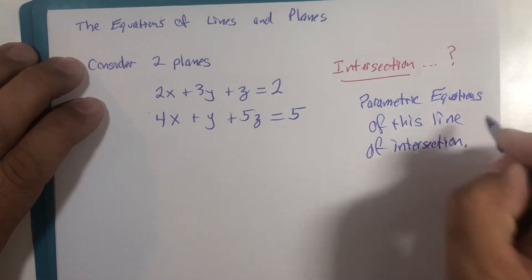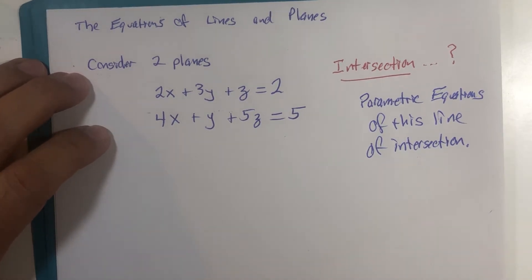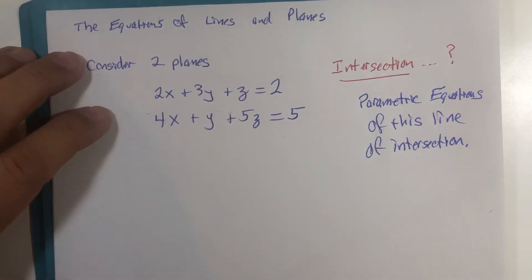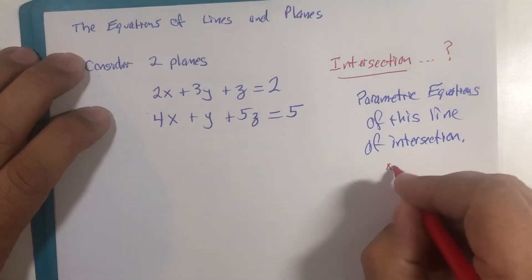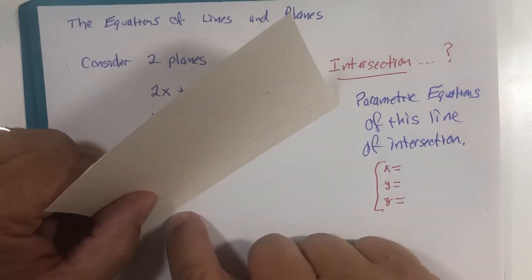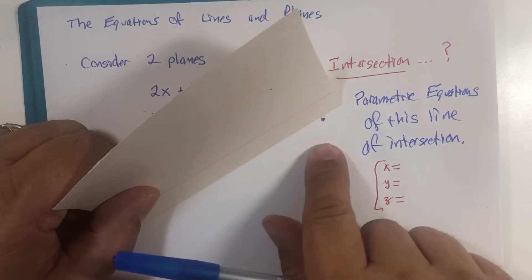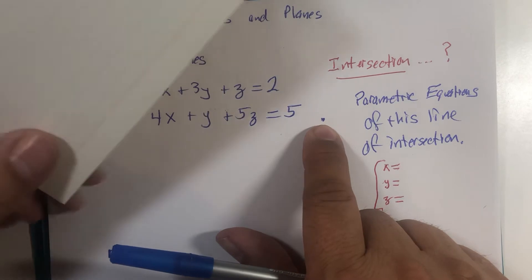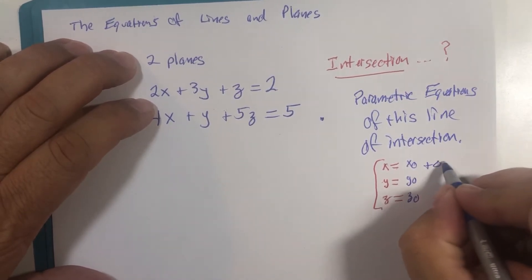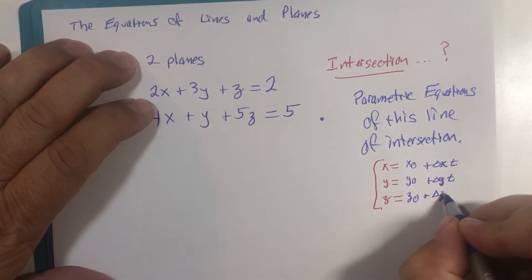To write parametric equations of a line, what we are going to need — using the base model x equals, y equals, z equals — is first to know what direction that line is going, and also to know the coordinates of a point on the line, because the line needs coordinates to start at and then a direction to go.